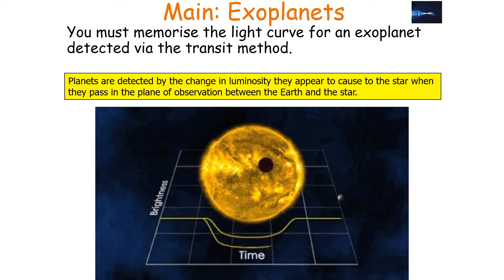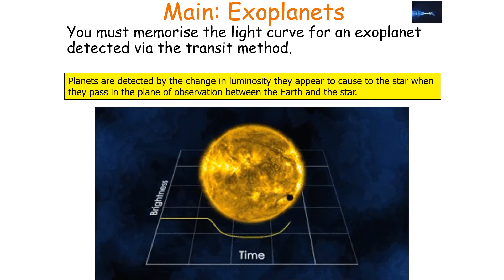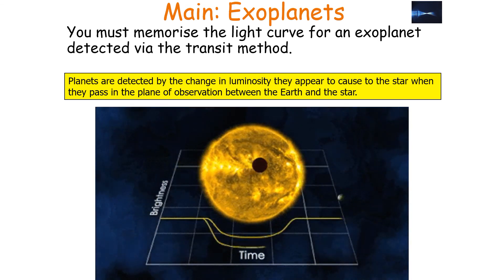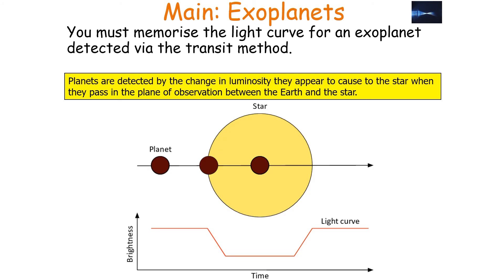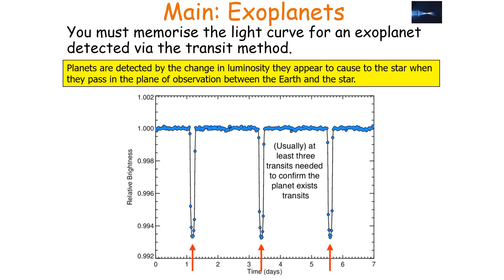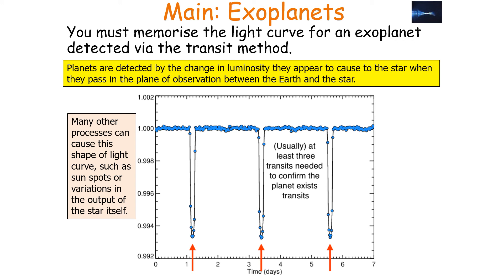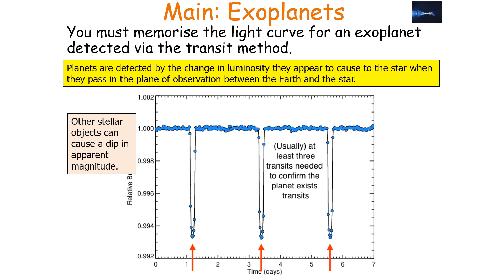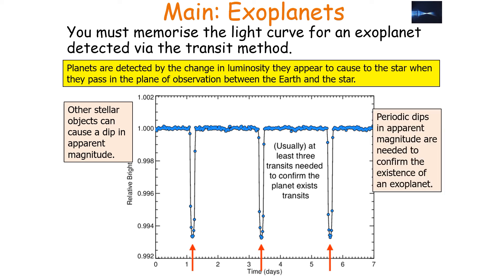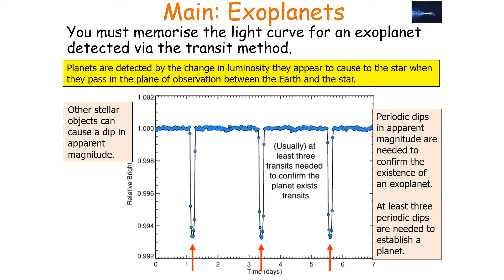Planets are detected by the change in luminosity they cause to the star when they pass in the plane of observation. Before the exoplanet passes between the line of sight, there is no change in brightness, but as it passes you observe a dip — the light curve. A periodic or repeating dip in apparent magnitude is key, since other processes such as sunspots, variations in the star's output, or comets can also cause dips. Periodic dips are needed to confirm an exoplanet, and at least three periodic dips are required to establish one.